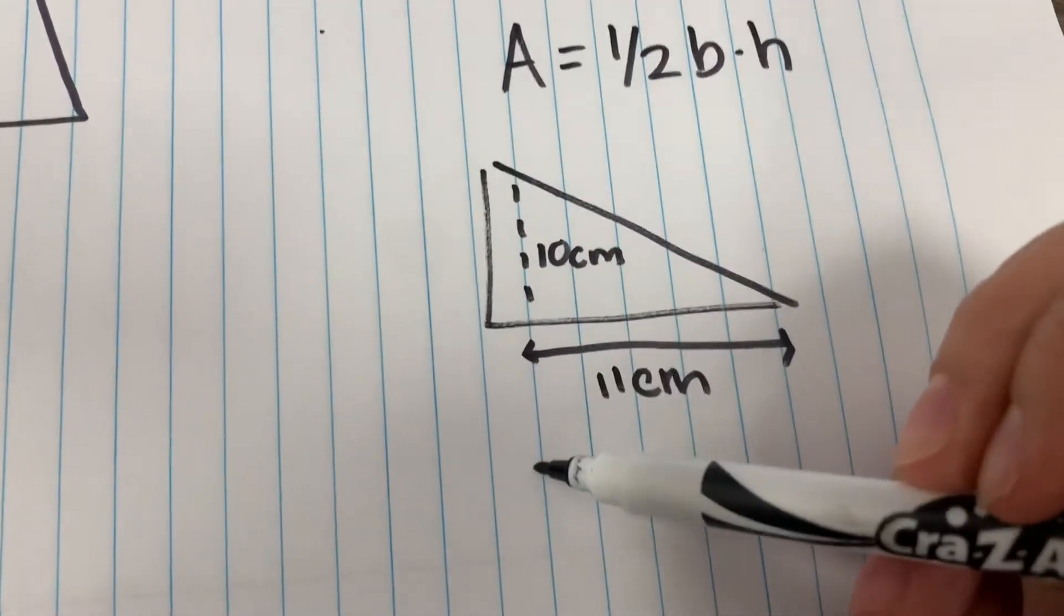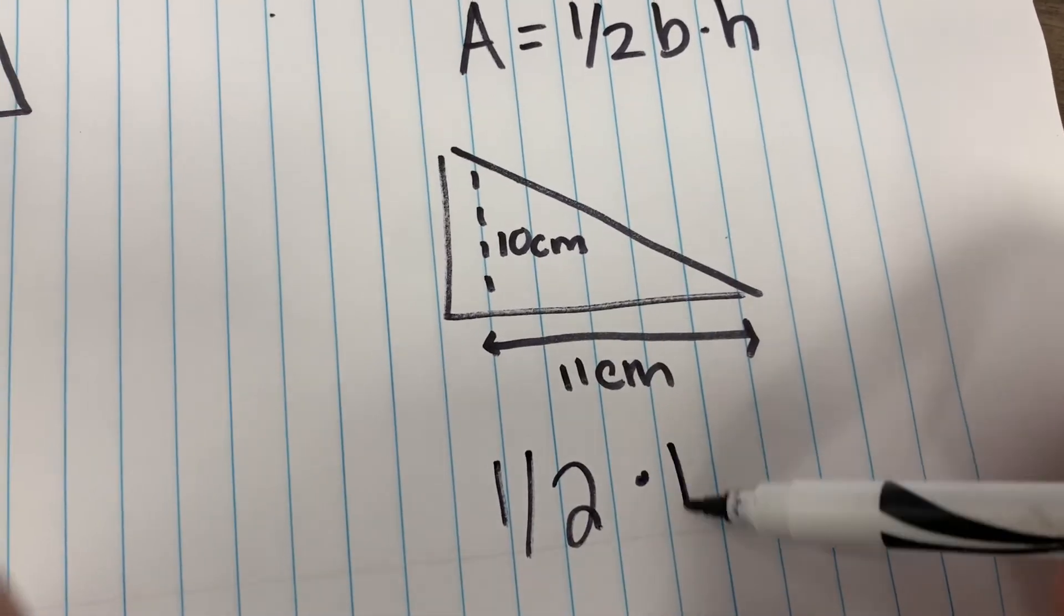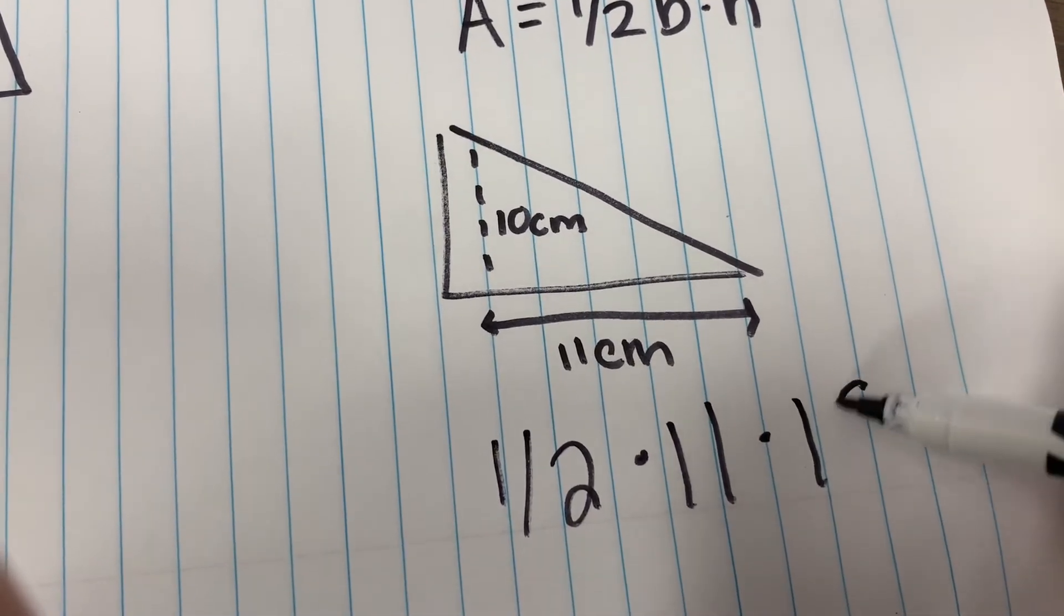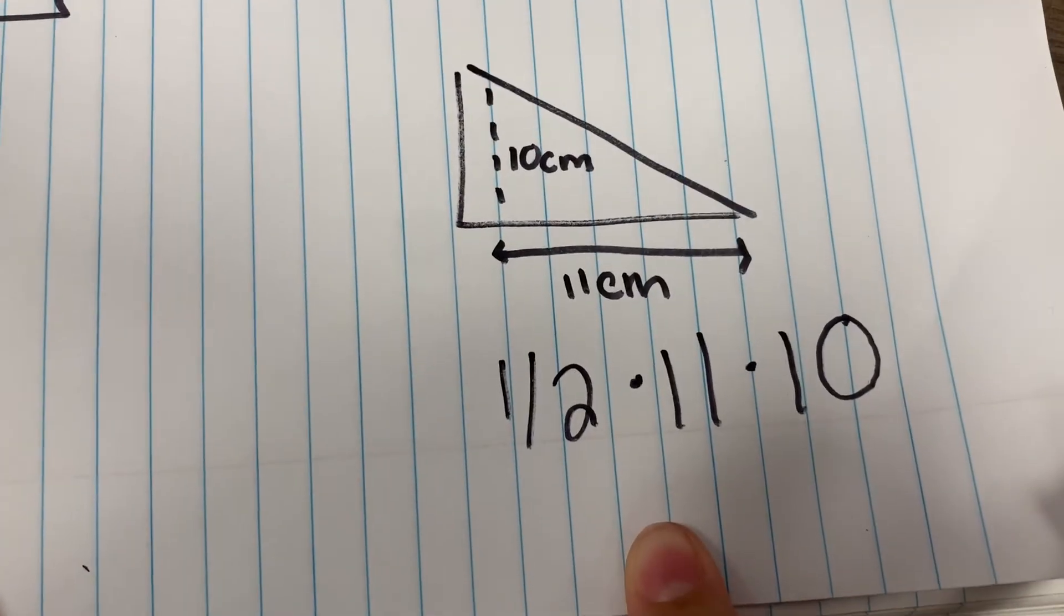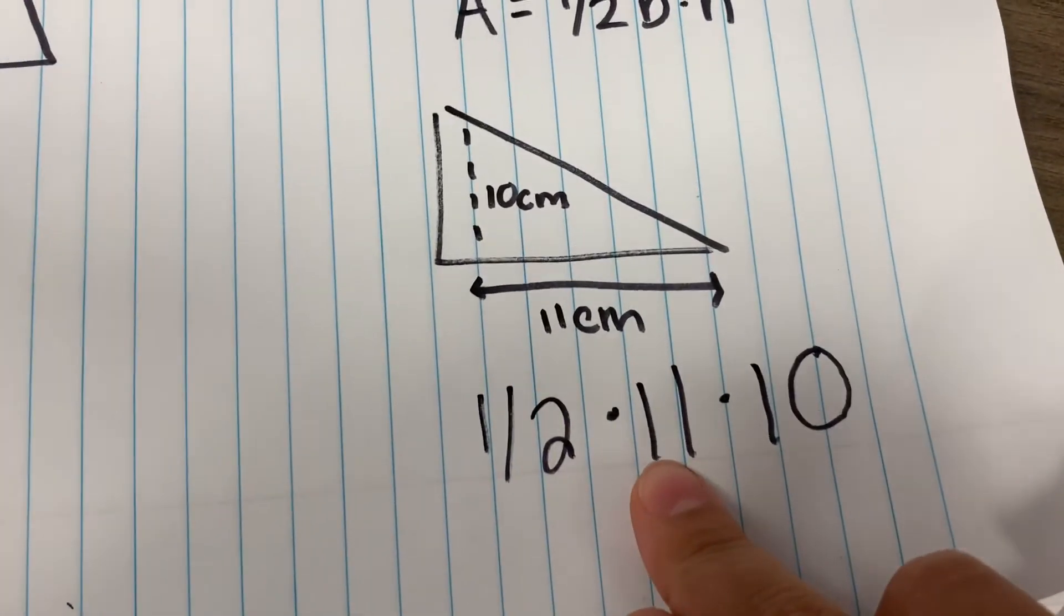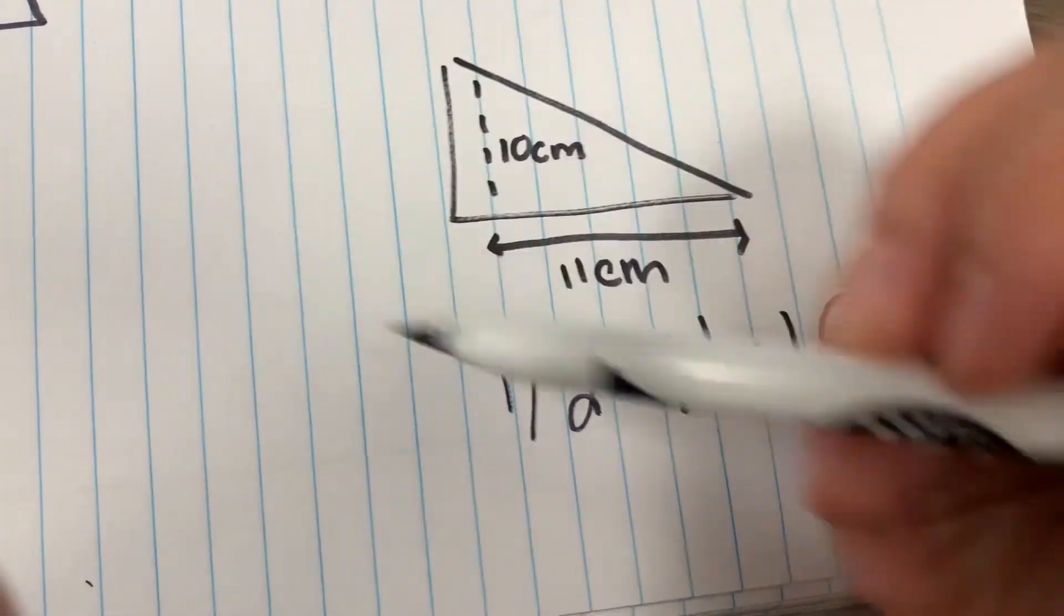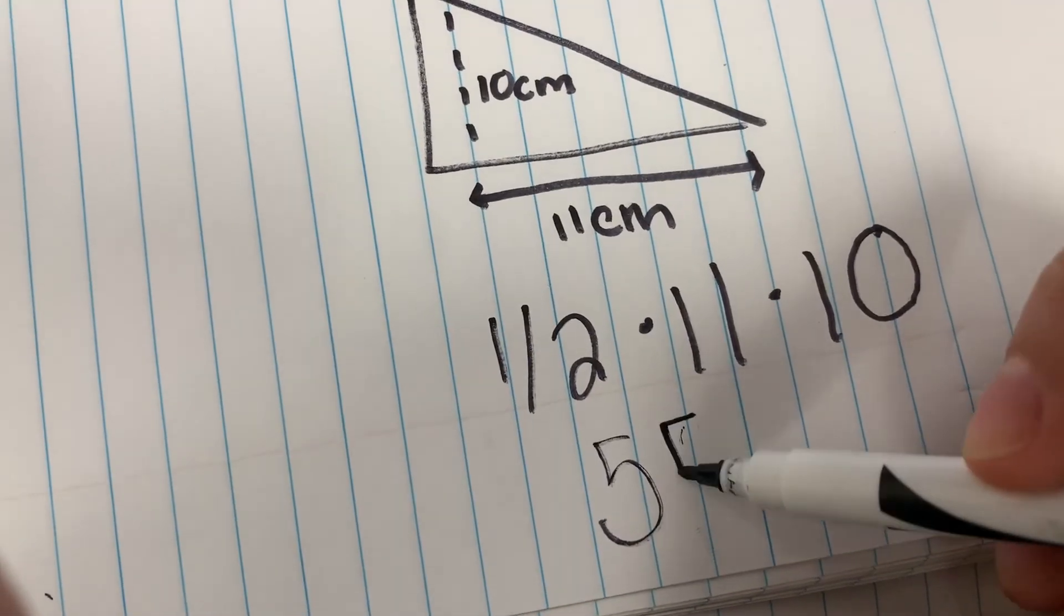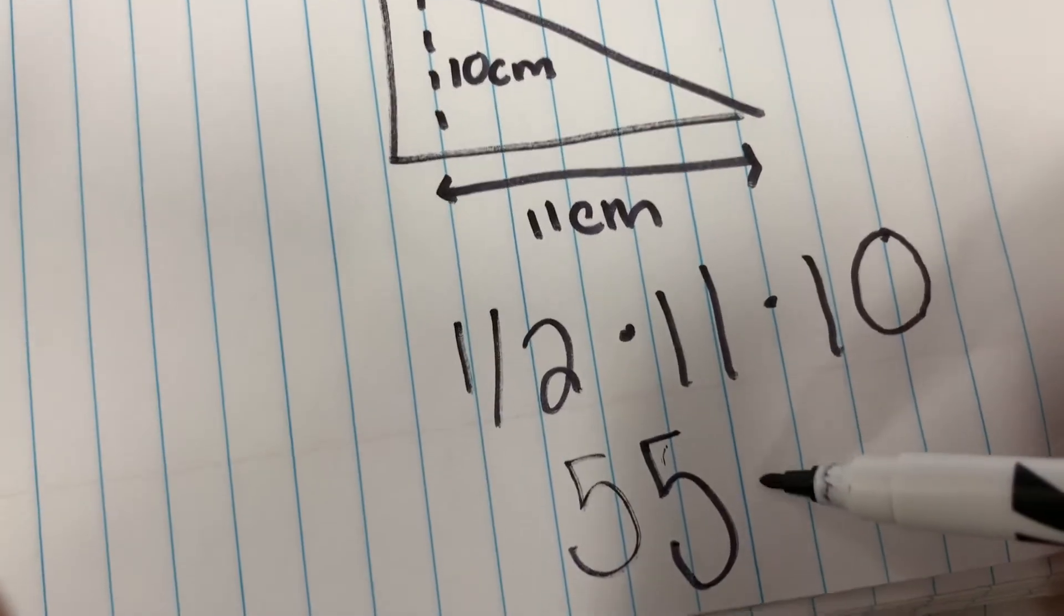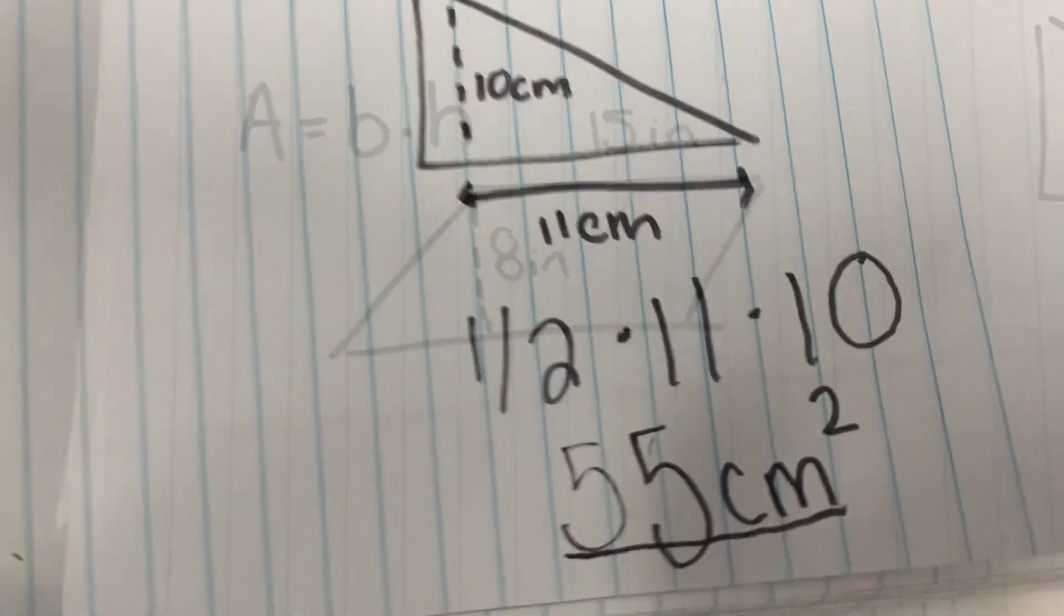We're going to do one-half times 11 times 10. You can just plug this into your calculator: one-half times 11 times 10. You'll see that the answer is going to come out to 55. Make sure again that it's centimeters squared. That is the answer there.